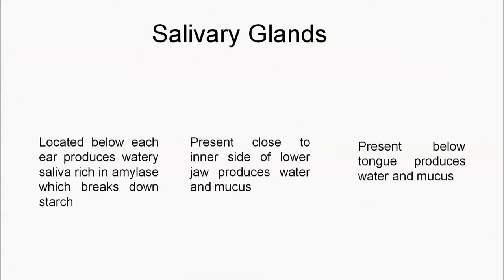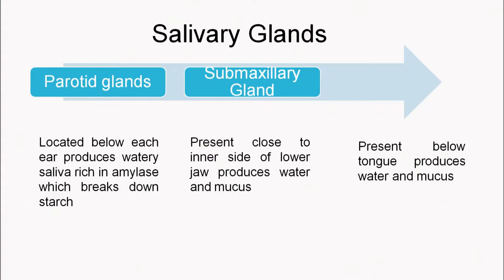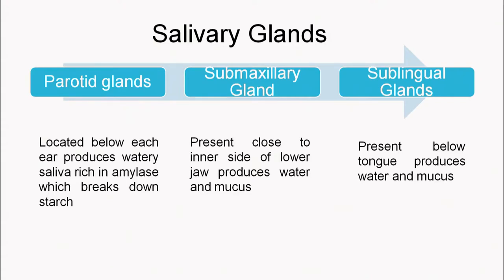The salivary glands include: the parotid glands, located below each ear, which produce watery saliva rich in amylase that breaks down starch. The sub-maxillary gland, present close to the inner side of the lower jaw, produces water and mucus — when you keep your mouth open at the dentist, it is the sub-maxillary and sublingual glands secreting fluid. The sublingual glands, present below the tongue, also produce water and mucus.